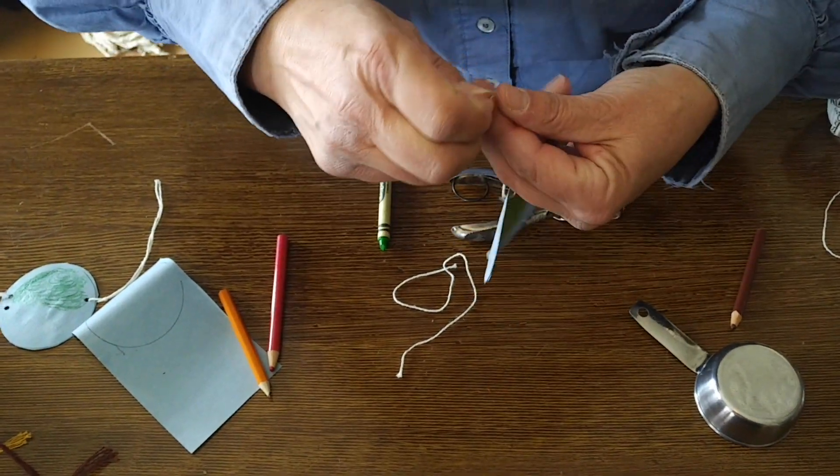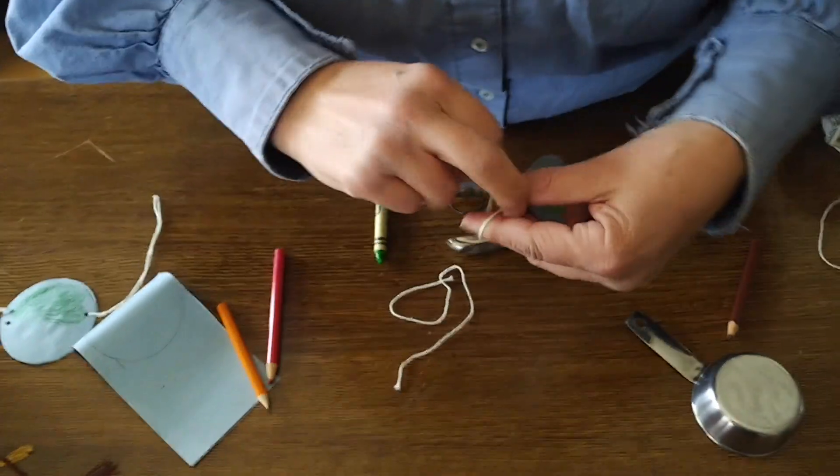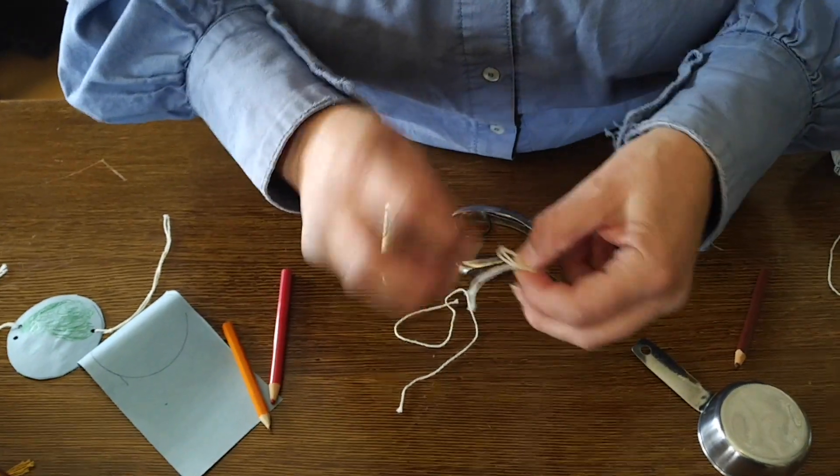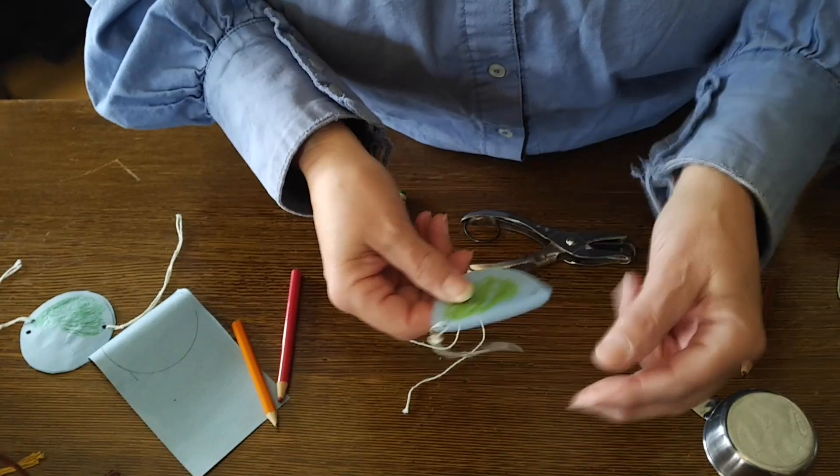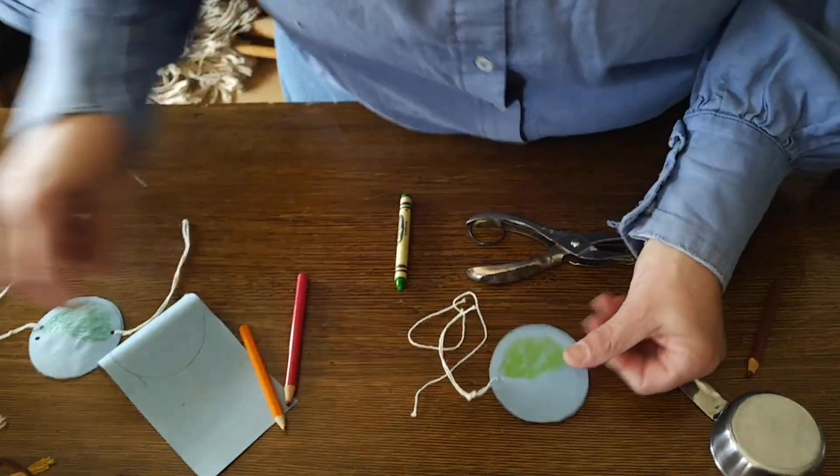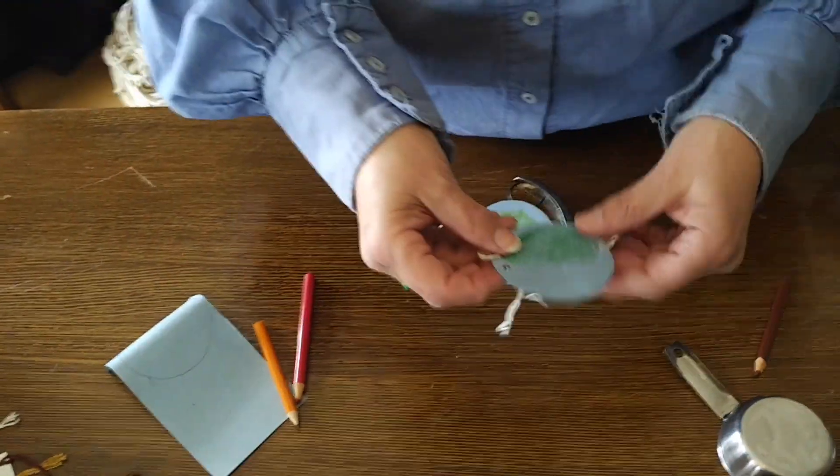And if you have trouble making knots just get an adult to help you out. But I usually go right around my fingers like this. And you want to do that on both sides, and you'll end up with something like this.